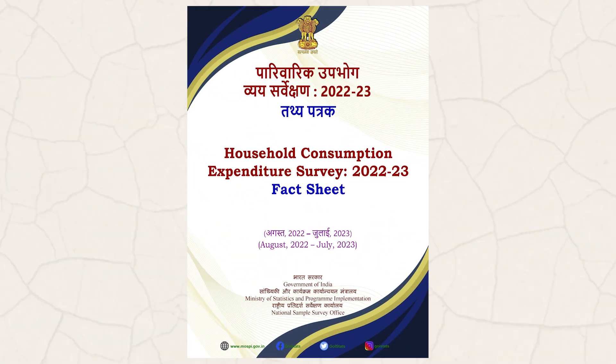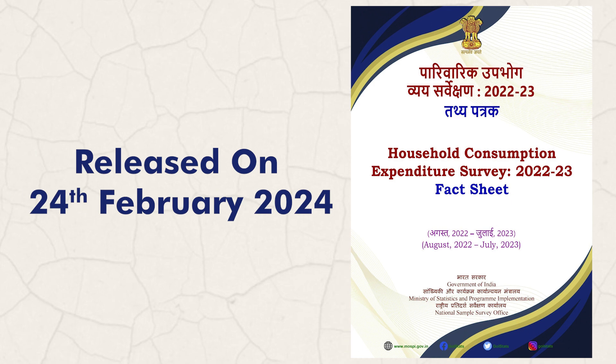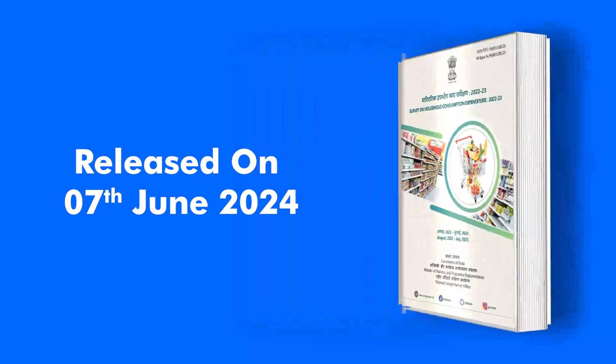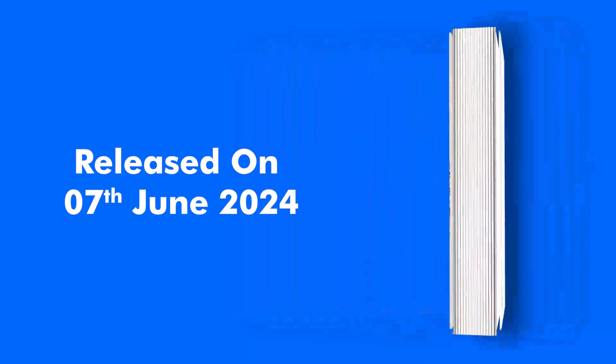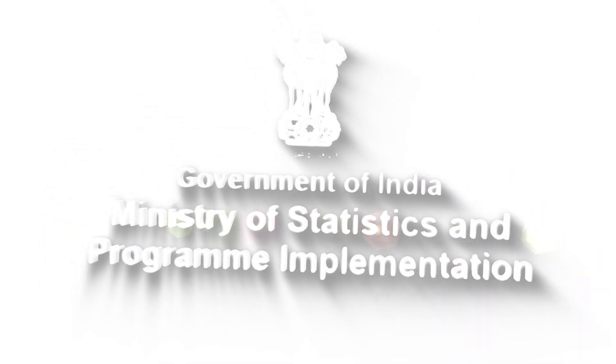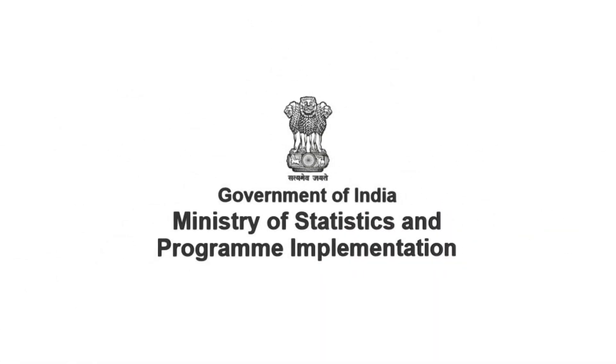The Fact Sheet on Summary Results of HCES 2022-23 was released on 24th February 2024. A detailed report and unit-level data were released on 7th June 2024. These reports are available on the website of the Ministry of Statistics and Programme Implementation.